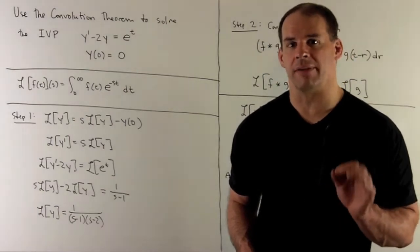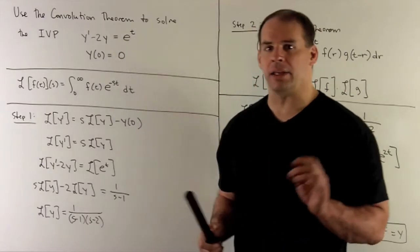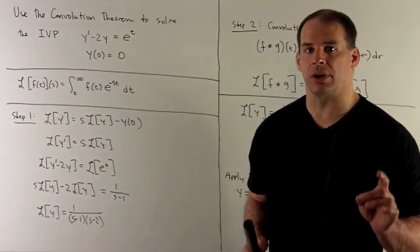Use the convolution theorem to solve the initial value problem: y prime minus 2y equals e to the t, y of 0 equals 0.